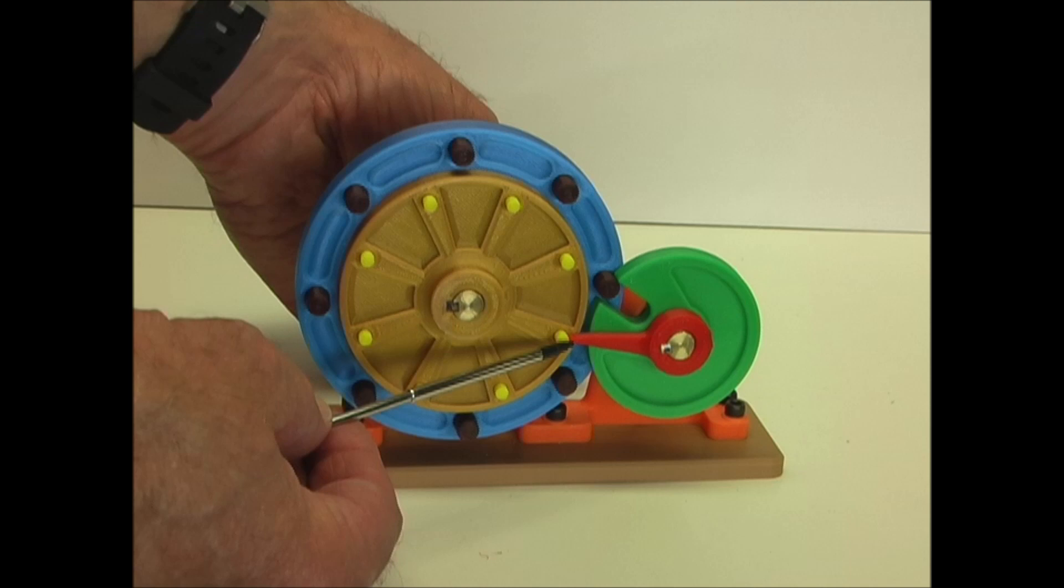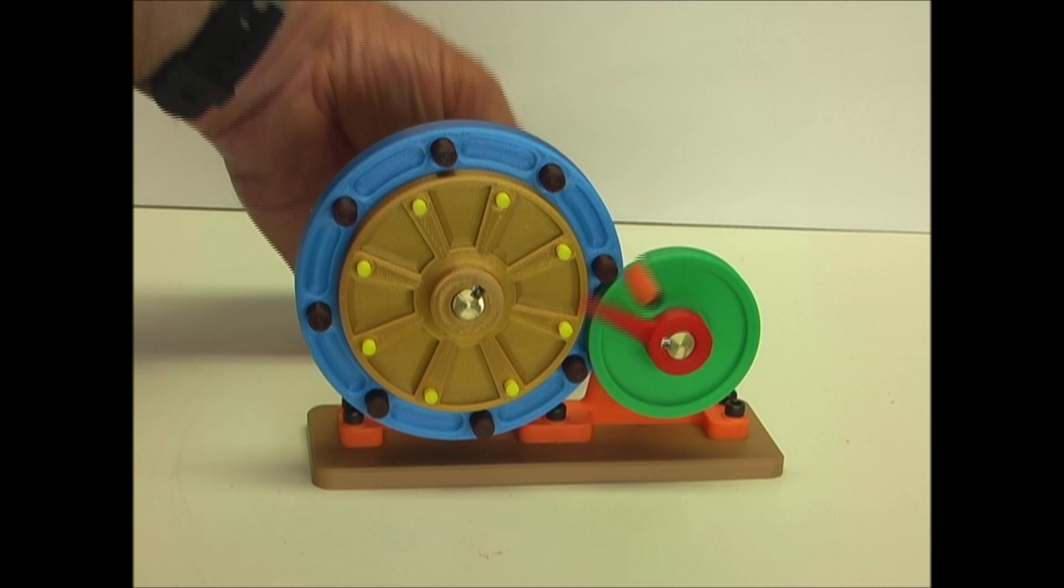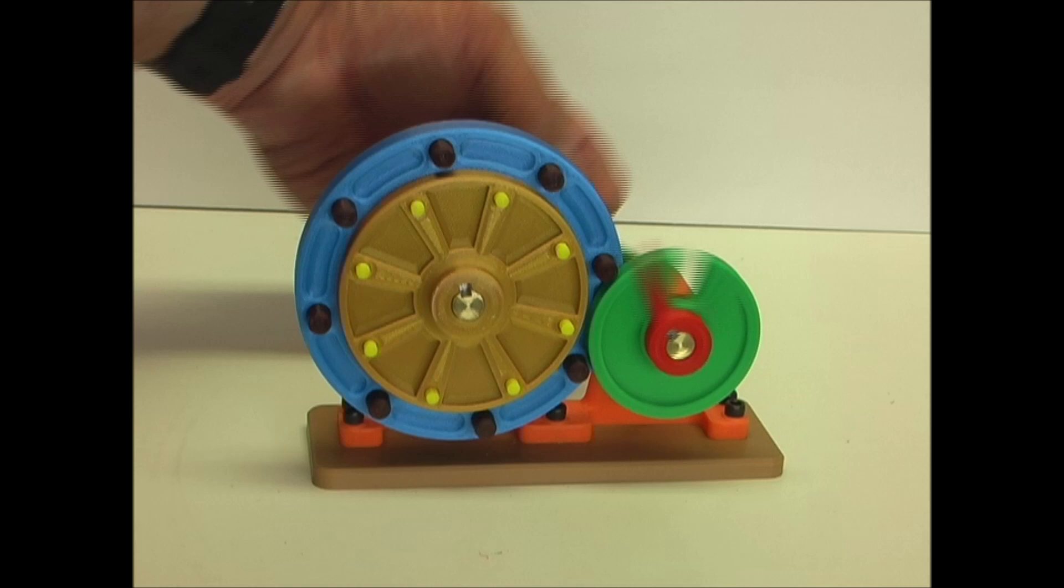So again it comes around, pushes on the yellow pin far enough, engages with the larger pin in the outer circle, that advances it, it's locked in place, and then this just continues on, indexing the wheel.